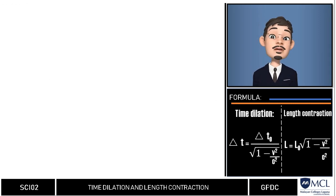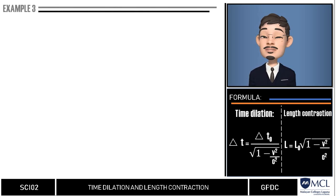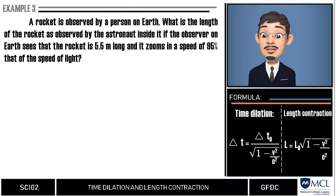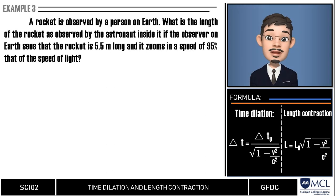Now, let us have some length contraction problems. Here, it says a rocket is observed by a person on Earth. What is the length of the rocket as observed by the astronaut inside, if the observer on Earth sees that the rocket is 5.5 meters long and it assumes a speed of 75% that of the speed of light.